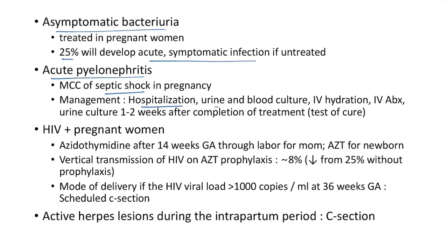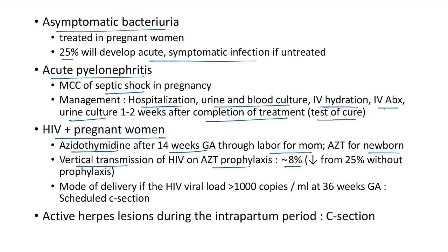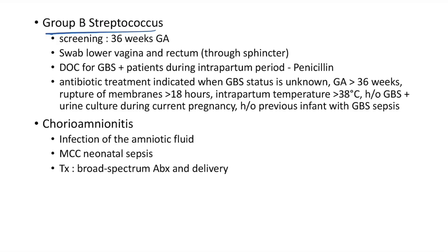Management of HIV-positive pregnant women: give zidovudine after 14 weeks gestational age through labor for the mother, and also for the newborn. Vertical transmission of HIV on zidovudine prophylaxis is only 8%, whereas without prophylaxis it is 25%. If HIV viral load is >1000 copies/mL at 36 weeks, the mode of delivery is scheduled cesarean section. If there are active herpes lesions during the intrapartum period, proceed to cesarean section.